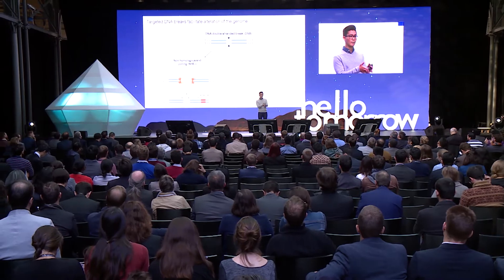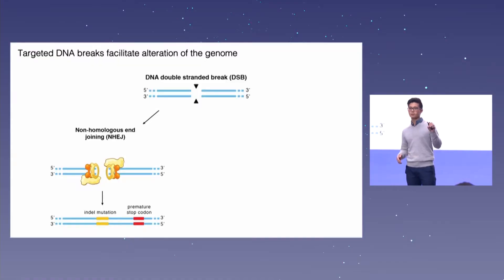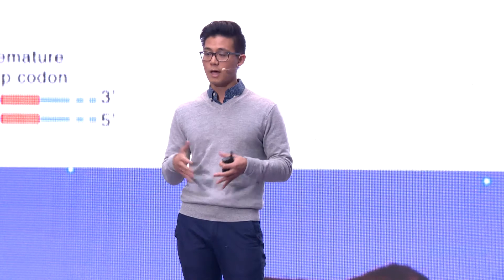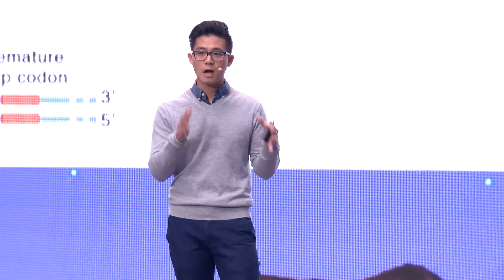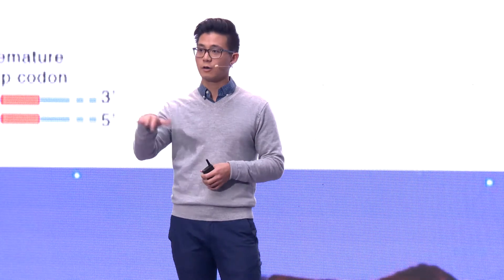Usually it does so perfectly, but oftentimes this can happen in an error-prone way, where you can introduce insertions or deletions at that break site. If this happens in the right place inside of a gene, that can scramble the protein or truncate it, leading to loss of function. So you can knock out the function of that gene and essentially turn it off.